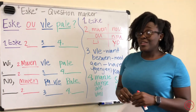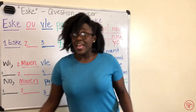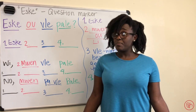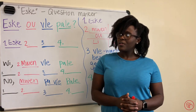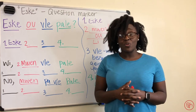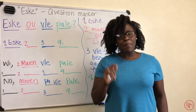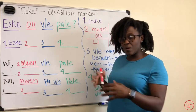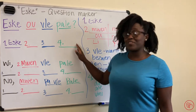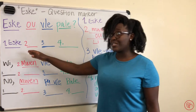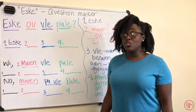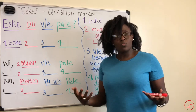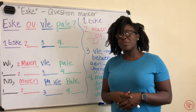Est-ce que ou vle dormi? Dormi is to sleep. Oui, mouin besoin dormi. Or non, mouin pas besoin dormi. As you become more fluent in Haitian Creole, sentences don't have to stop with the four basic building blocks. You can continue: est-ce que ou vle dormi demain? Do you need to sleep tomorrow? Oui, mouin besoin dormi demain.